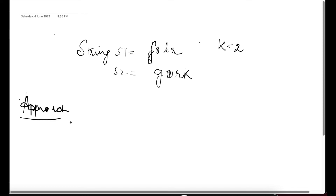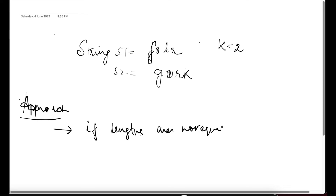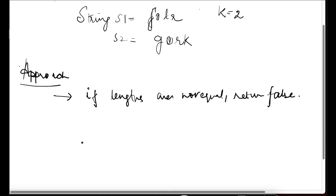The approach: number one, the edge case — if the lengths are different we have to return false. If lengths are not equal, return false. Otherwise, what we can use is hashing — we'll use a hash map.